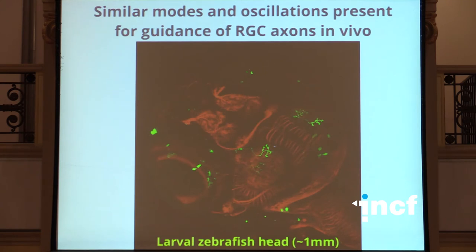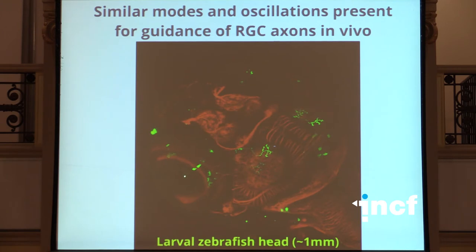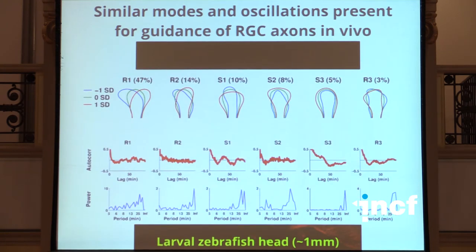We found that similar modes and oscillations were present in vivo. So far all the data shown is in vitro, and one might say this dynamic behavior is just an artifact of the in vitro environment. In collaboration with Ethan Scott, we used zebrafish where a very small proportion of retinal ganglion cells are labeled with green fluorescent protein, and did time-lapse imaging of the movement of those growth cones across the tectum as those axons pathfind. Applying the same analysis, we found exactly the same kinds of shapes and the same kinds of oscillations — so it's not just a property of the in vitro environment.